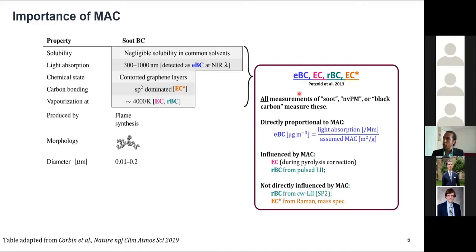We perform measurements based on those properties, and we come up with different names if we're trying to be very specific about the measurement. But my point here is that many of these measurements rely on an assumed MAC. So when we talk about EBC, we're actually talking about light absorption, but expressing it in units of equivalent mass by assuming a MAC. When we talk about EC, or when we measure EC or RBC, we need the soot to have a high MAC for the RBC measurement from Pulse LAI, and we assume something about the MAC when we're doing the EC measurement, because we have an optical correction involved. In contrast, continuous wave LAI and Raman spectroscopy, mass spectrometry are not influenced by MAC.